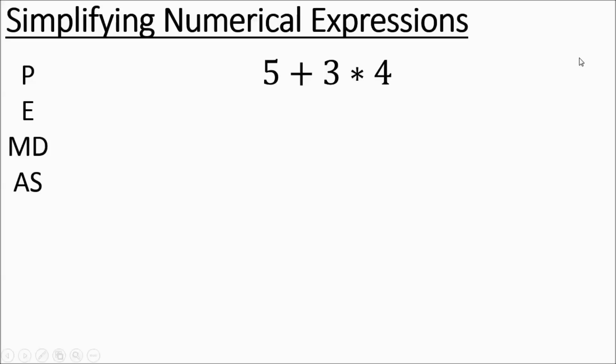So this first expression is going to be 5 plus 3 times 4. If you want, you could pause this, work it out, see what you come up with. A lot of kids will say this one is going to be 32 because they want to add the 5 and 3 first. But when you go through the order of operations, it's not going to be 32.